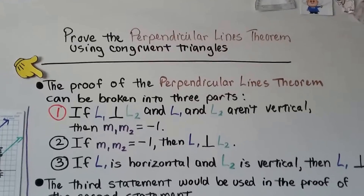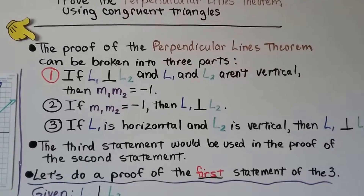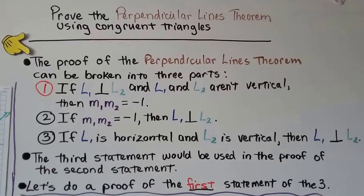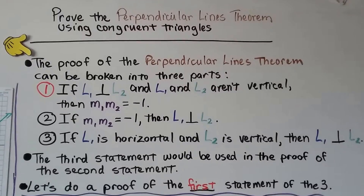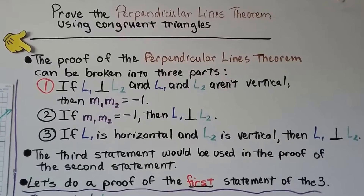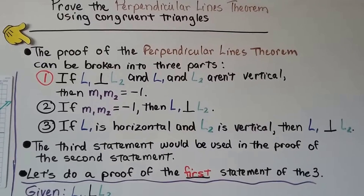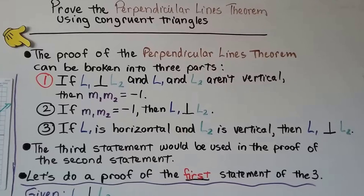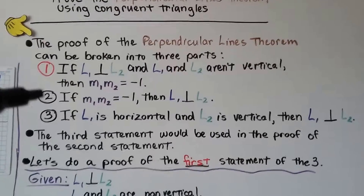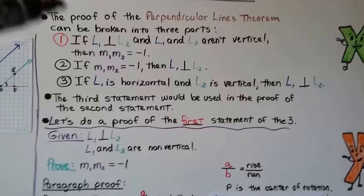Now, prove the perpendicular lines theorem using congruent triangles. The proof can be broken into three parts. The first: if l sub 1 is perpendicular to l sub 2 and neither line is vertical, then m sub 1 times m sub 2 equals negative 1. The second: if m sub 1 times m sub 2 equals negative 1, then l sub 1 is perpendicular to l sub 2. The third: if l sub 1 is horizontal and l sub 2 is vertical, then they are perpendicular. The third statement can be used in a proof of the second statement.